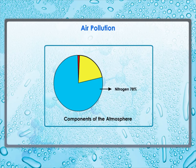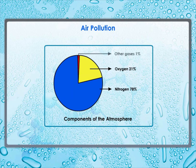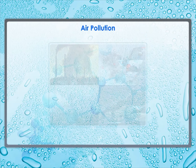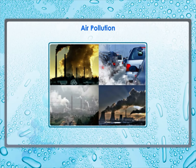Air consists of a mixture of gases. By volume, about 78% of this mixture is nitrogen, and about 21% is oxygen. Carbon dioxide, argon, methane, ozone, and water vapor are also present in very small quantities. When air is contaminated by unwanted substances which have a harmful effect on both the living and the non-living, it is referred to as air pollution.